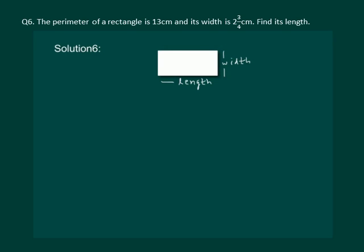Let us try to understand the question. We are given the perimeter of the rectangle to be 13 cm. Its width is given as 2 and 3 by 4 cm, and the length is not given. So let us assume that the length is equal to x cm.